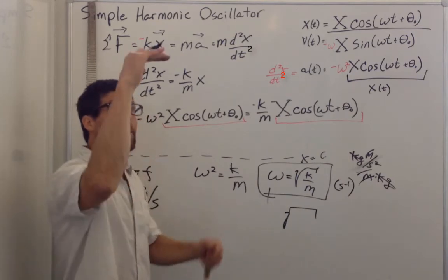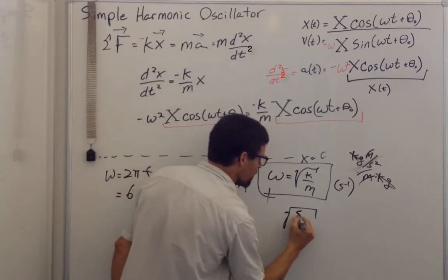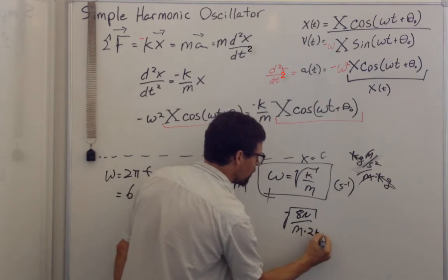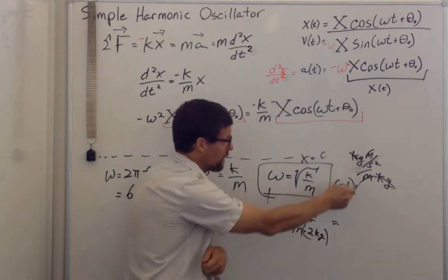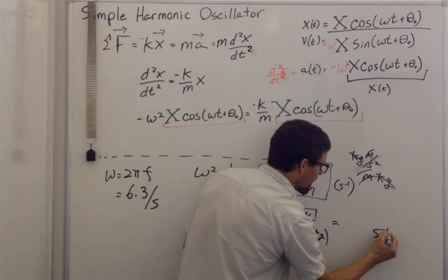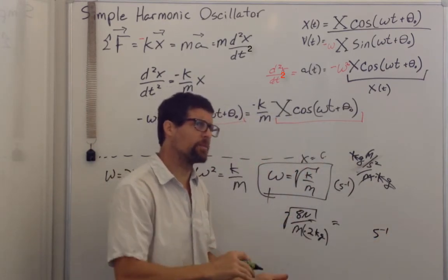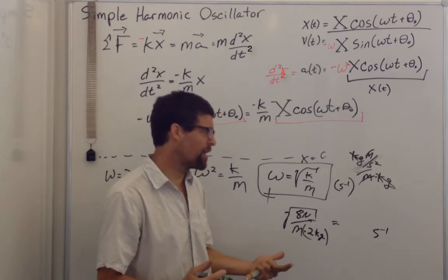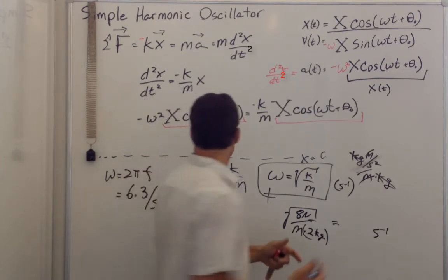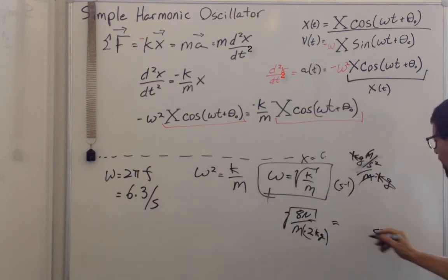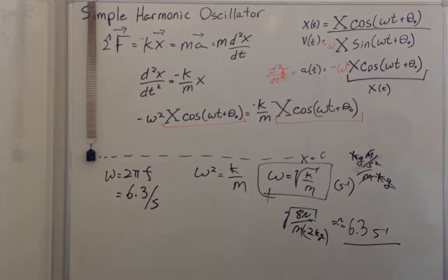Let's see if that makes sense. K was about 8 newtons per meter and the mass was 0.2 kilograms. The newtons per meter kilogram gives me per second. Now the math. 8 divided by 0.2 is like 8 times 5 is 40. Square root of 40 is, yeah, like 6 squared is 36. So close enough, close enough to 6.3 per second. I like it.